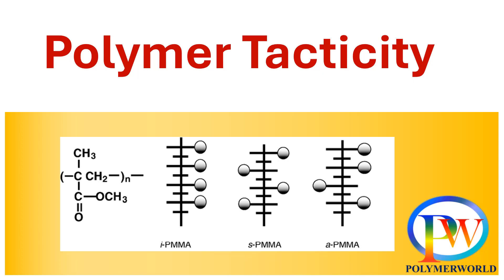When designing a polymer, it is very important that the polymer exhibits the desired properties. Many of the physical properties of a polymer can be controlled by just changing the arrangement of side groups in a polymer chain.